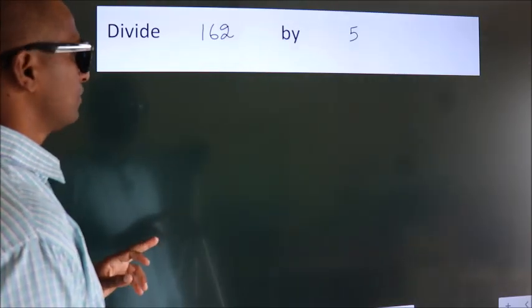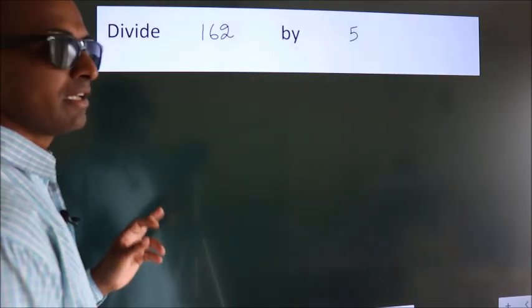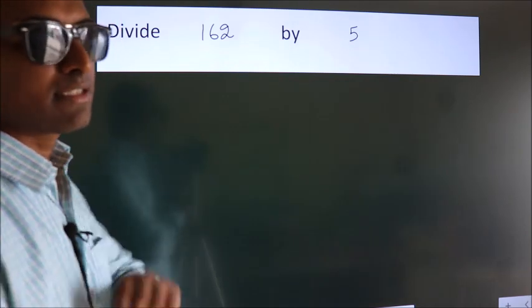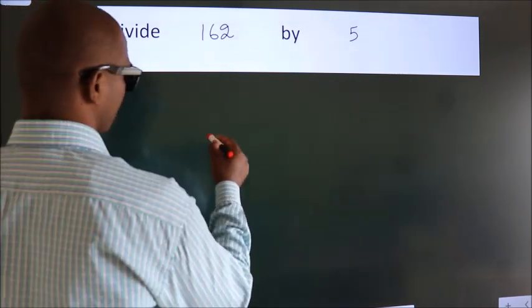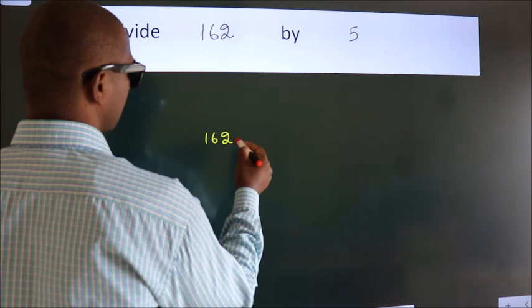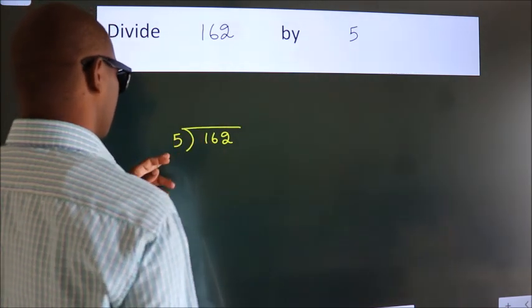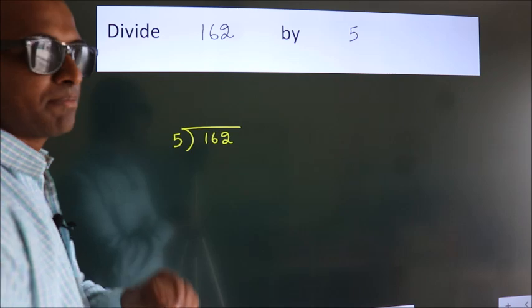Divide 162 by 5. To do this division, we should frame it in this way. 162 here, 5 here. This is your step 1.